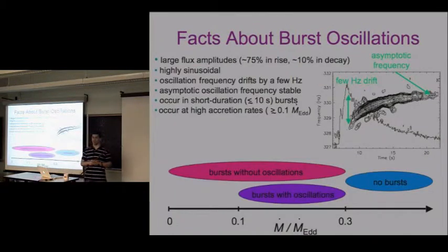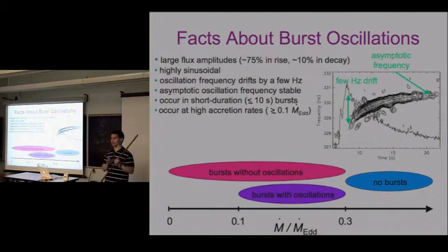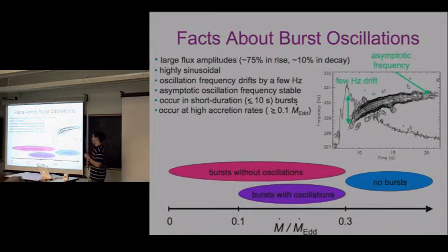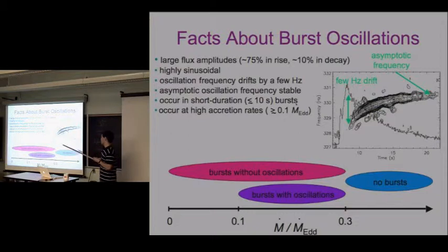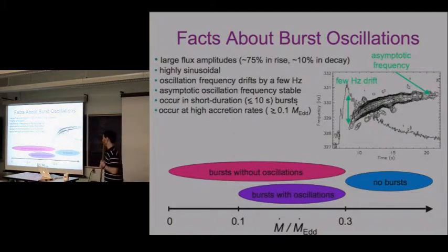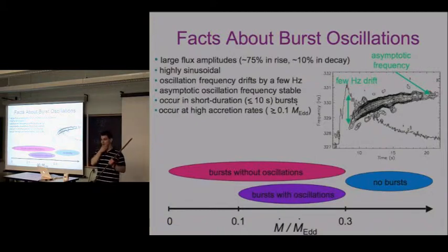Burst oscillations have very large flux amplitudes - they can be really strong, especially in the rise, with up to 75% amplitudes, and about 10% in the decay, which is still significant. They're very sinusoidal. There's a frequency drift of about a few hertz in the tail, characteristic of many oscillations. Although there's this drift, the asymptotic frequency is always very stable - about one part in a thousand - and this is indicative that the asymptotic frequency is exactly or very close to the rotation frequency of the neutron star.